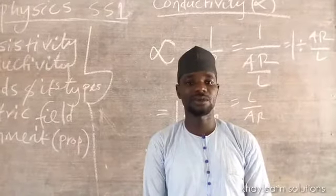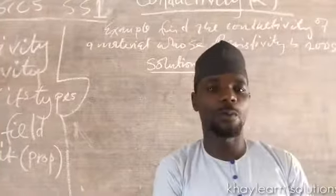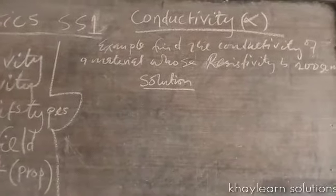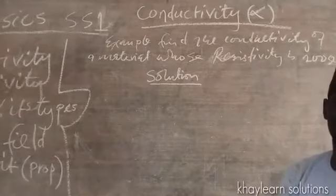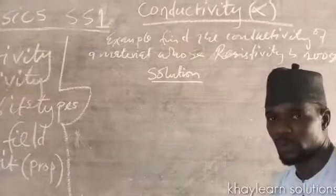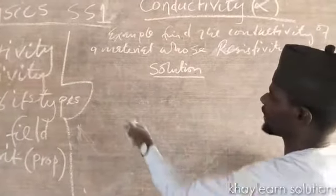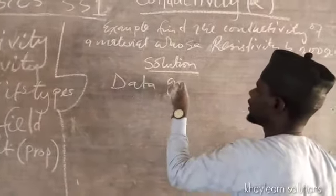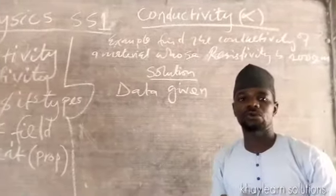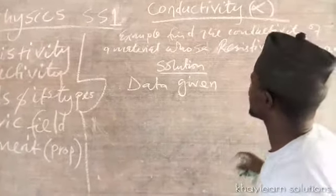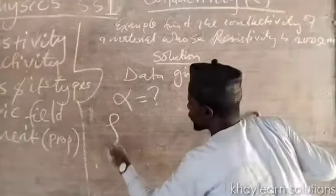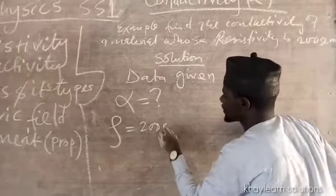Let's take an example under conductivity. The question says: find the conductivity of a material whose resistivity is 200 ohm·meters. We write the solution. First, we bring out the data — the raw information stated in the question. What we have is: find conductivity (σ) of a material whose resistivity ρ equals 200 ohm·meters.